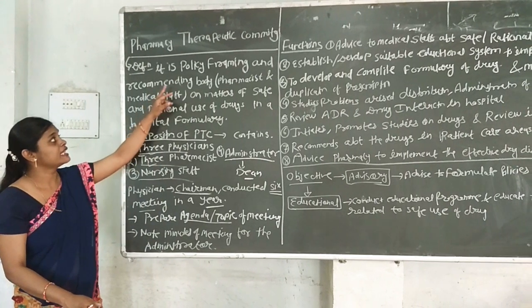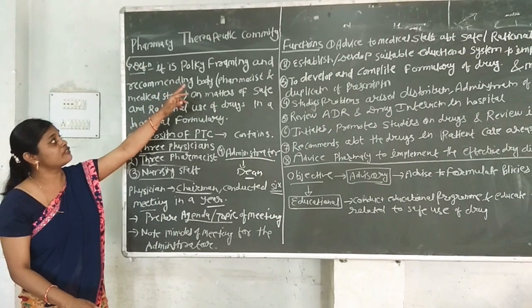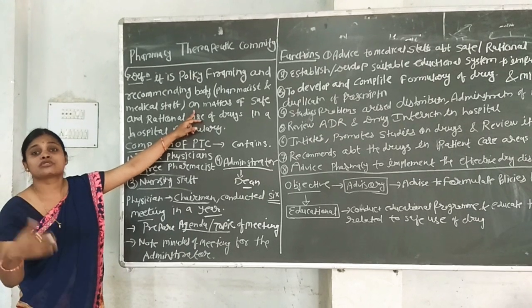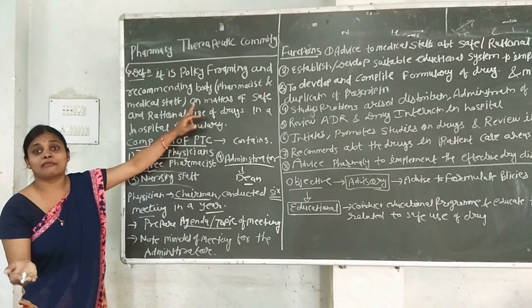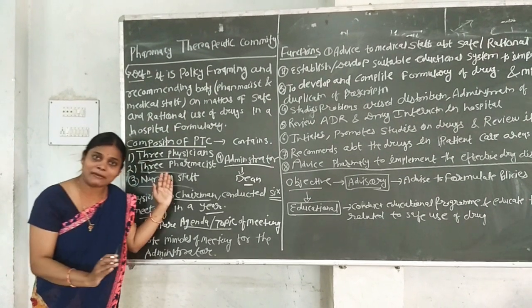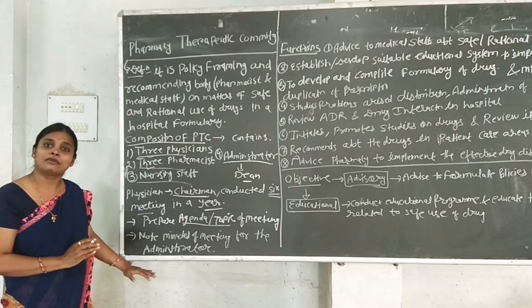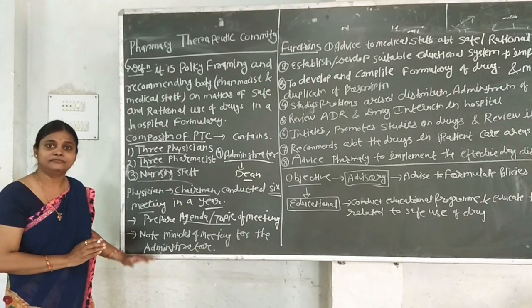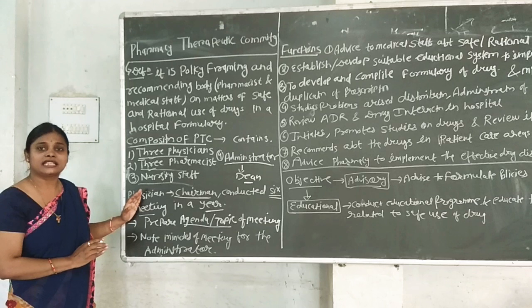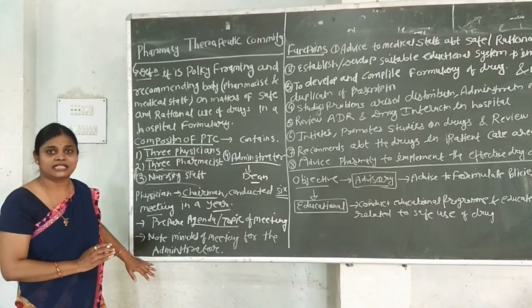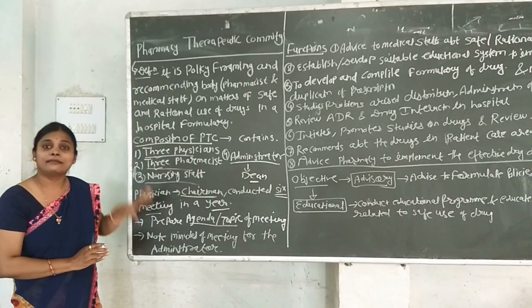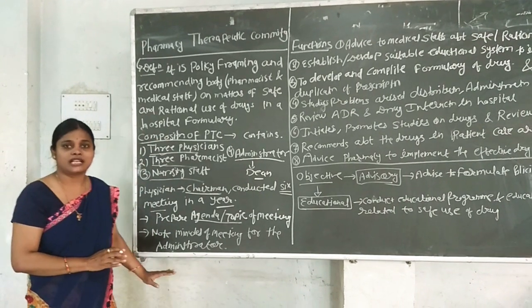Quoting the definition: PTC is a policy framing and implementing body, where members discuss the safe and rational use of drugs. We have now seen the composition — how many members, what they do. This completes the composition of the PTC.